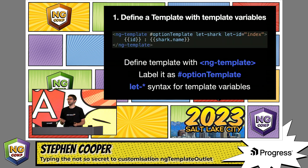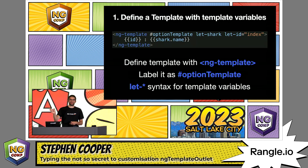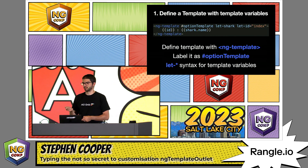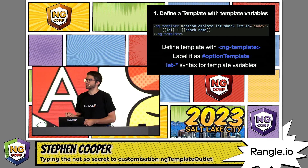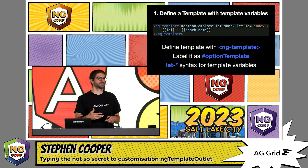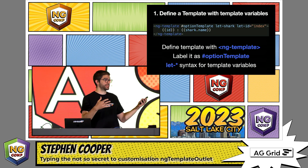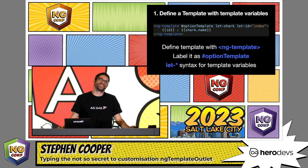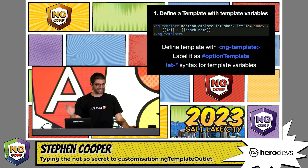So if we look at these steps — step one, we define a template. We're going to use the ng-template tag here and label it as option template, which enables us to retrieve it later on. Then we've got these template variables: let shark and let id. These are a way for us to extract information from the context which is going to be provided, but use them in our template. Where you're defining your template, you don't have access to what that shark is going to be. And if you're wondering why I'm saying shark — this is a follow-on from that talk where I made selectors for two of my sons: one for sharks, one for tractors.